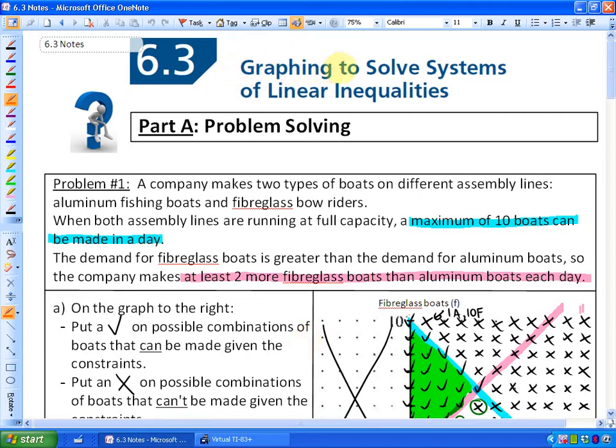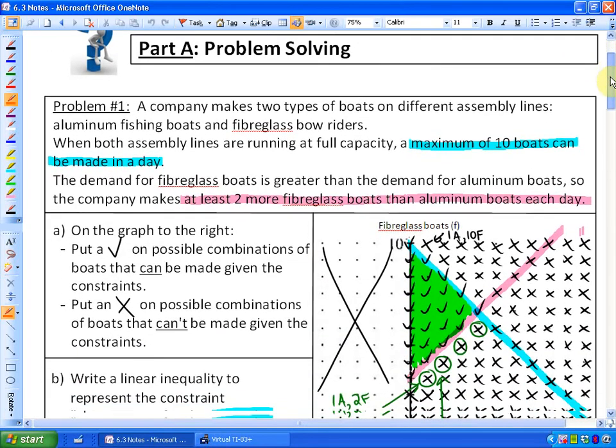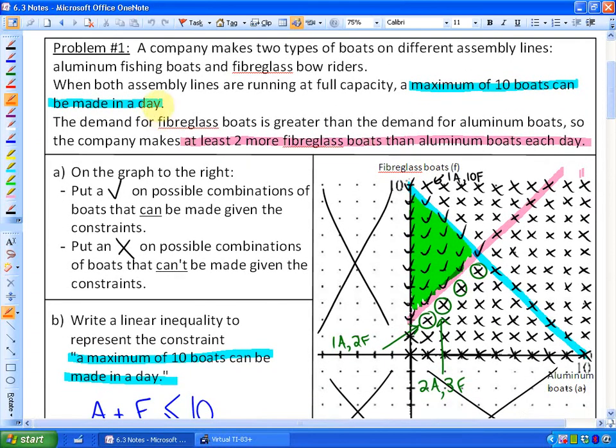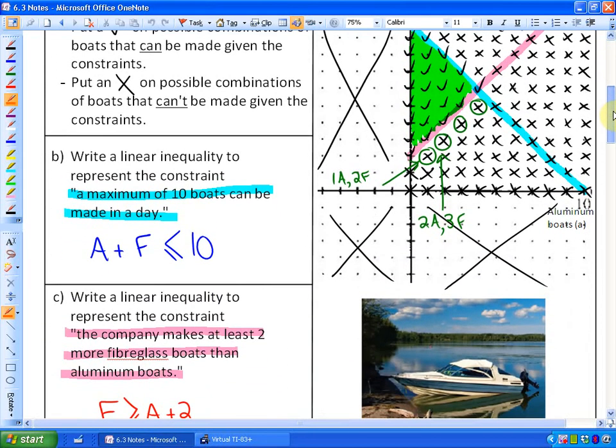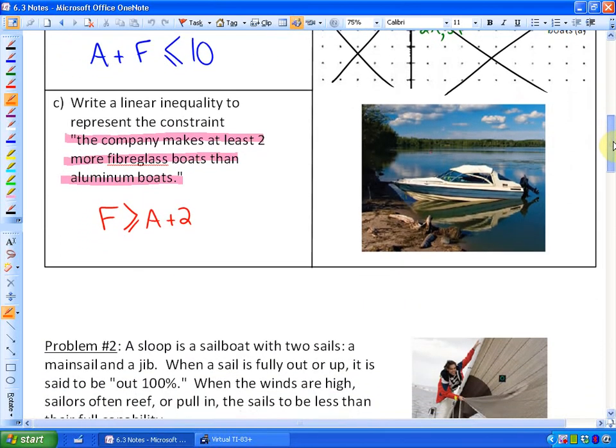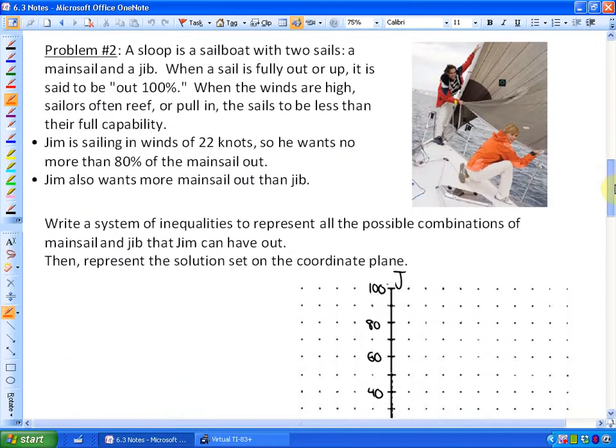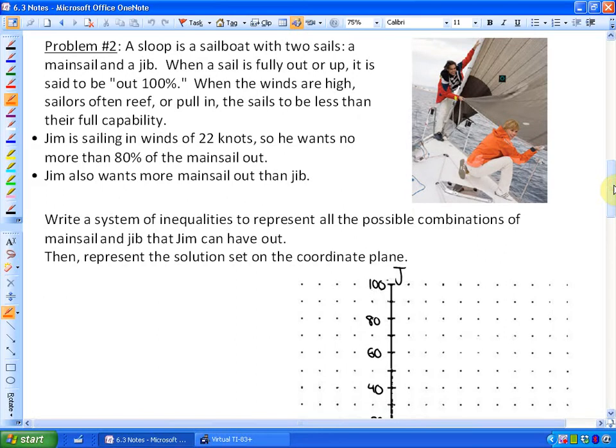We are going to continue to look at graphing to solve systems of linear inequalities, specifically looking at word problems. In the previous lesson, we looked at a problem having to do with bow riders and fiberglass boats. We took a less mathematical approach and a more systematic approach, looking at specific coordinates or combinations of fiberglass boats and bow riders that would meet the criteria. In the next one, we are actually going to see what if we took a mathematical approach. In other words, what if we made the system of linear inequalities before we graphed all the possible solutions, and that is what we are going to do in this particular question.